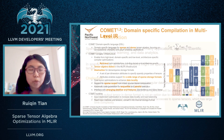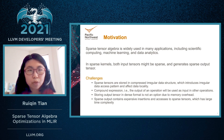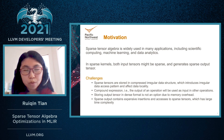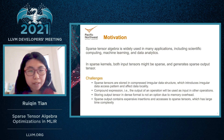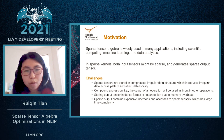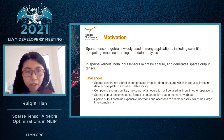As to the motivation of our work, sparse tensor algebra is widely used in many applications like scientific computing, machine learning, and data analytics. In sparse kernels, both the input might be sparse and the output may also need to be sparse. The challenge in supporting sparse tensor computation is that sparse tensors are stored in compressed, irregular data structures, which introduce irregular data access patterns and affect data locality.